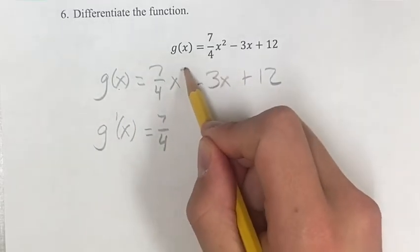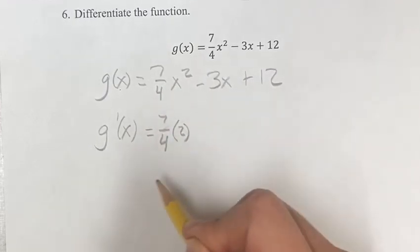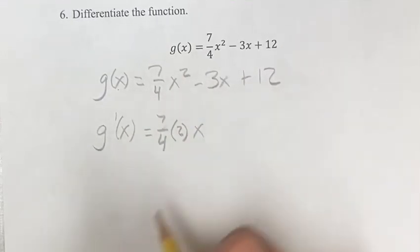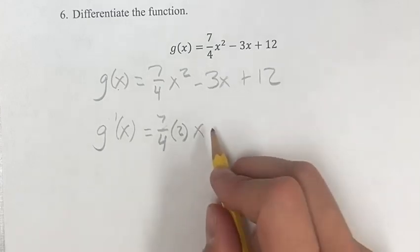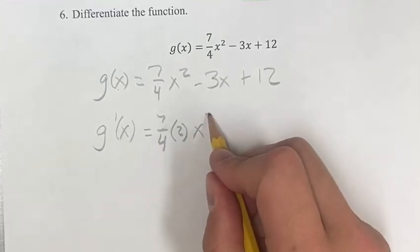Then you bring the exponent down, so we're multiplying it by 2, and then you subtract 1 from the exponent. Bring it down, subtract 1 from the exponent, so 2 minus 1.